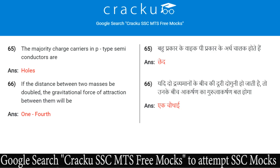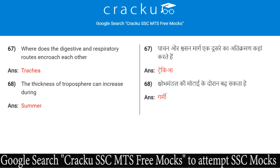If the distance between two masses is doubled, the gravitational force of attraction between them will be one fourth. Where do the digestive and respiratory routes cross each other? The answer is the trachea.